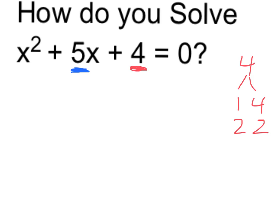Possible factors of 4 are 1 and 4, or 2 and 2. And obviously 1 and 4 work because they add up to 5.